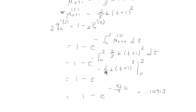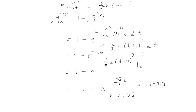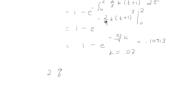Doing the algebra, I get that k is equal to 0.02. The next step is to find the probability of dying in two years due to the first decrement. That's going to be the integral from 0 to 2 of the probability of surviving t years multiplied by the force of mortality due to the first decrement.